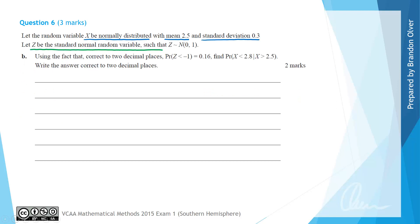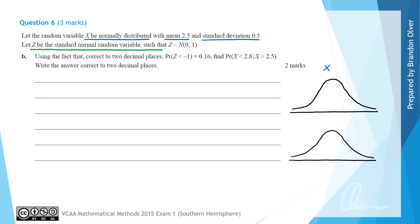For part B, we use the fact that correct to two decimal places the probability that Z is less than negative 1 equals 0.16, to find the probability that X is less than 2.8 given that X is greater than 2.5, writing the answer correct to two decimal places. Again we draw two bell-shaped distributions: X normally distributed with mean 2.5 and variance 0.3 squared, and Z normally distributed with mean 0 and standard deviation 1.